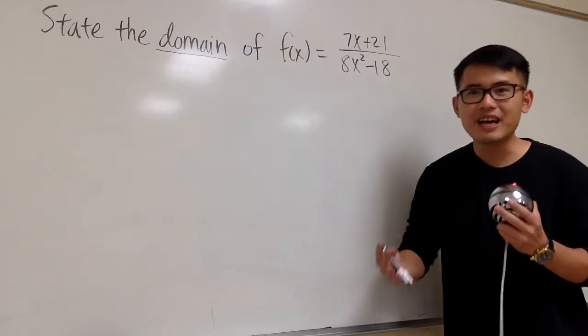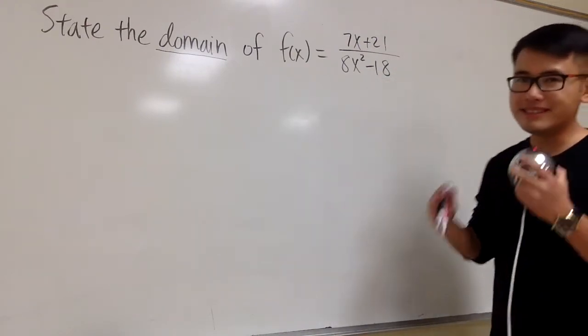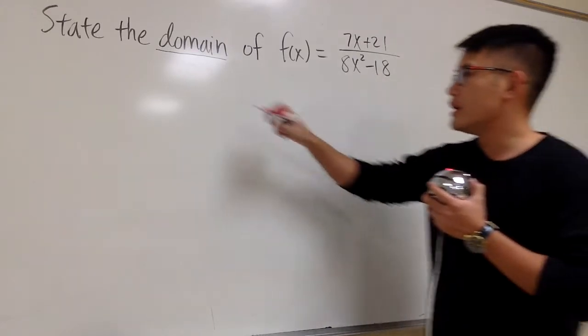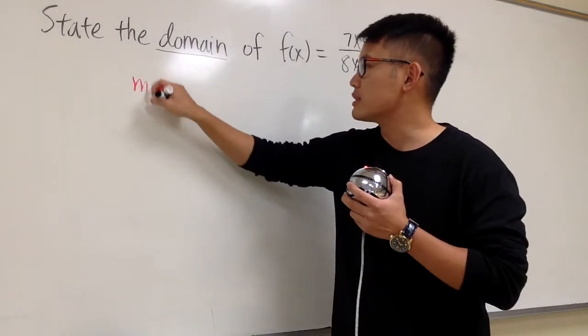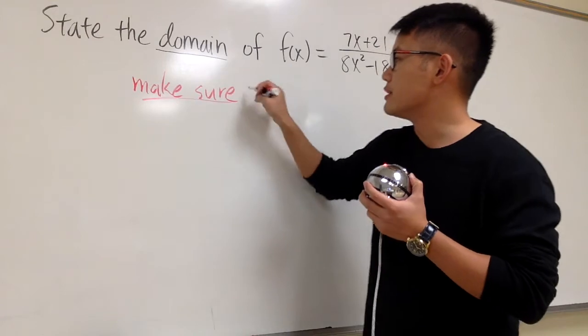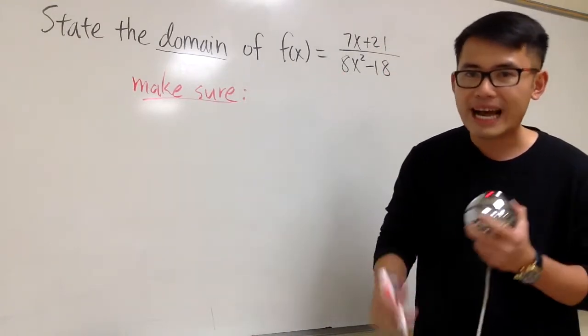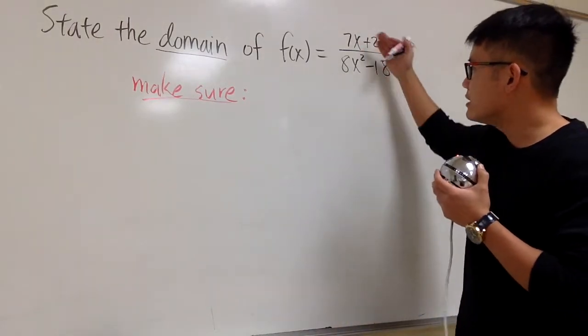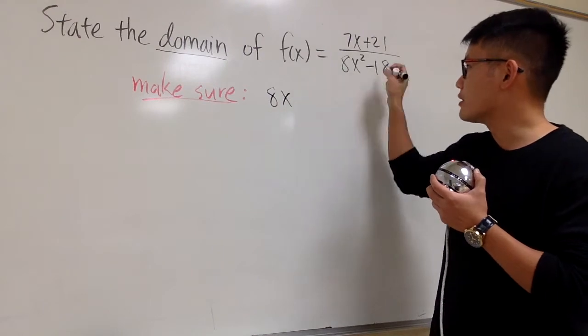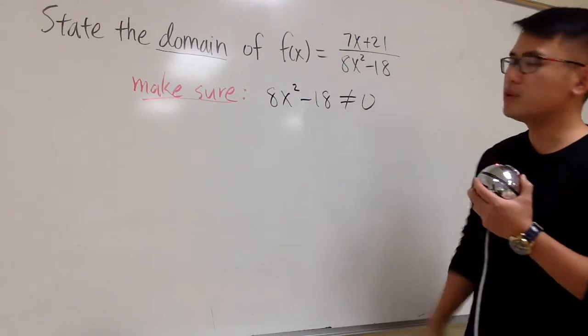And this is how we are going to set up the restriction. The top is innocent, the bottom is dangerous. We have to make sure that the denominator cannot end up to be zero. And whenever we are doing domains, I would like to just write down the words 'make sure,' because this will help you to remember we are trying to set the restriction that in this case here, the denominator cannot be zero. So let me write down the denominator, 8x² - 18. We don't want this to be zero.